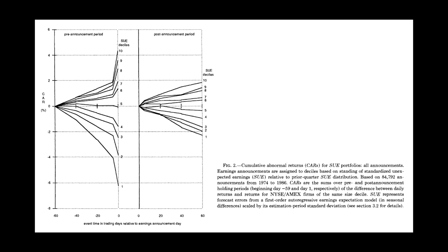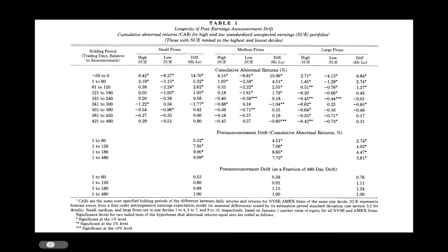In the post-announcement period, which was two months after the earnings announcement, the cumulative return is biggest for the tenth decile — that is, for firms that beat by the most — and smallest for the first decile — that is, for firms that missed by the most. Note that contrary to it being one or two weeks, the post earnings announcement drift period was actually two months in their 1989 paper.